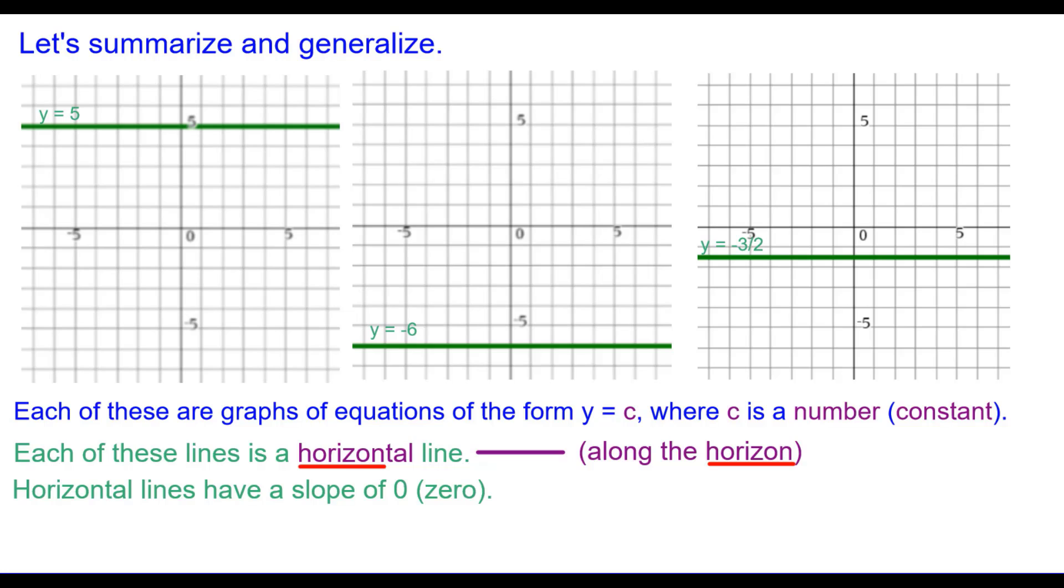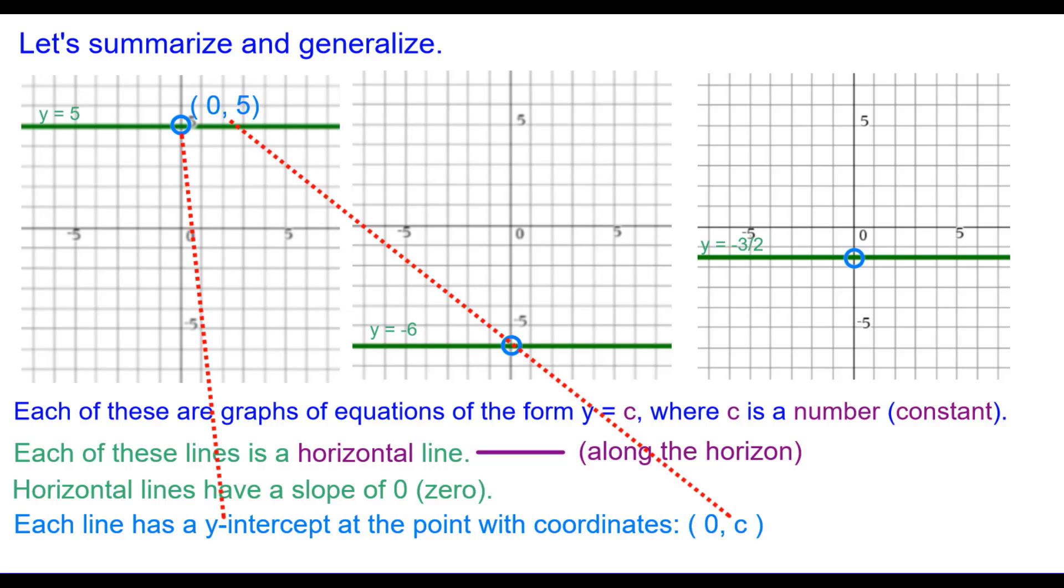And horizontal lines do have a slope of 0. Each line also has a y-intercept at the point with coordinates 0, whatever the constant is. For example, for y equals 5, 0, 5. For y equals negative 6, 0, negative 6 is the y-intercept.